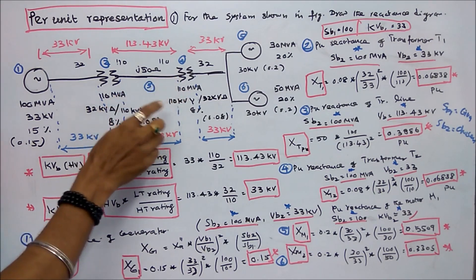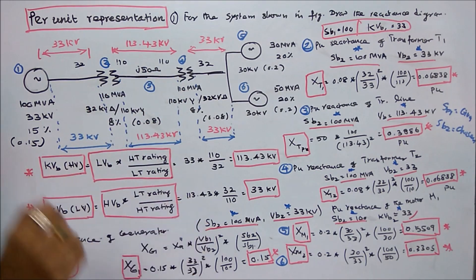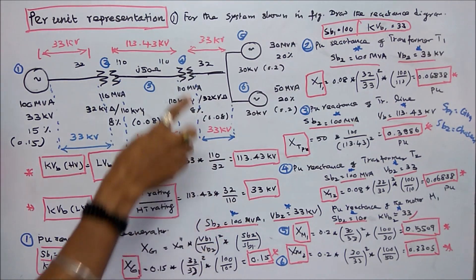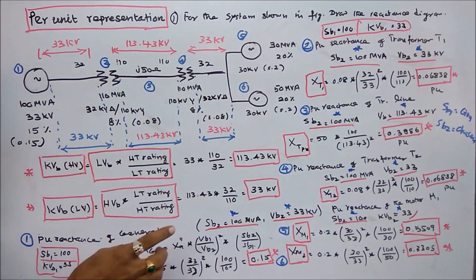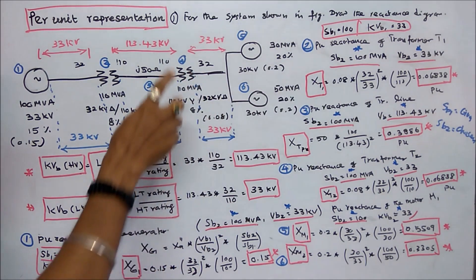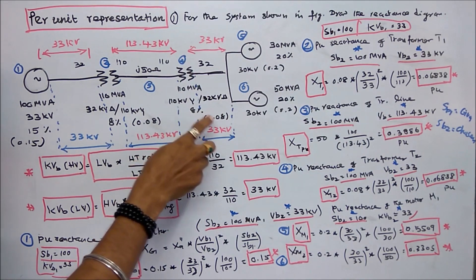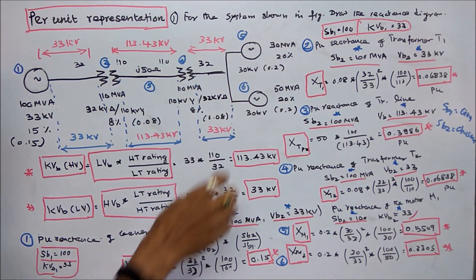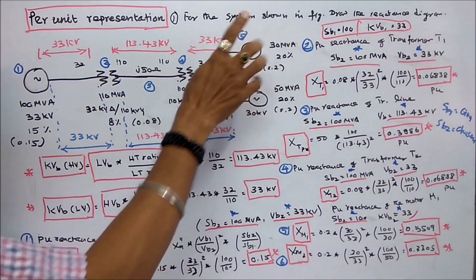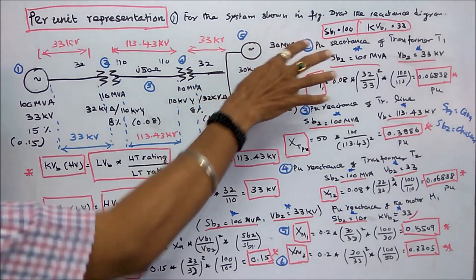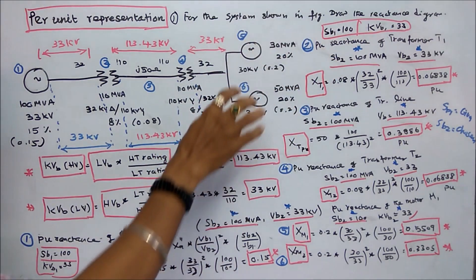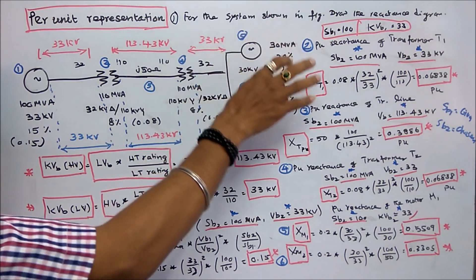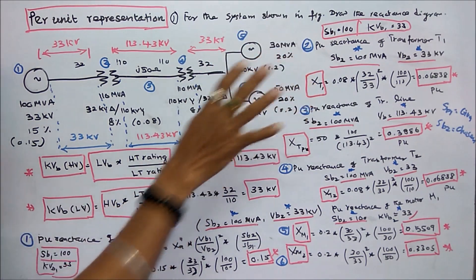The third is a transmission line with reactance J50 ohms. The fourth is a transformer with rating 110 MVA and leakage reactance 8% or 0.08 per unit. The fifth is a motor with rating 30 MVA, operating voltage 30 kV, and percentage reactance 20% or 0.2 per unit.